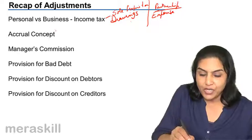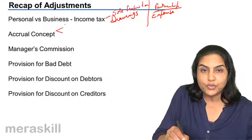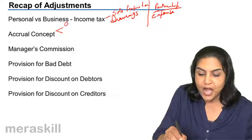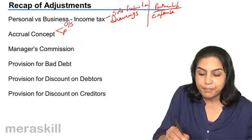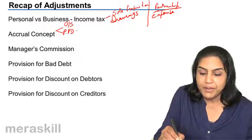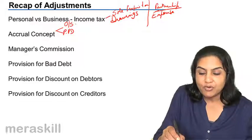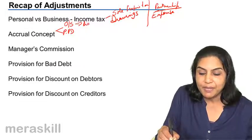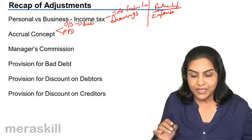Under the accrual concept, we came up with four terms with respect to expenses. We had outstanding expense and prepaid expense. What is outstanding expense? It is a liability because we have a liability to pay this.